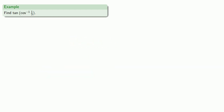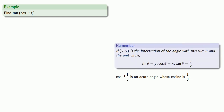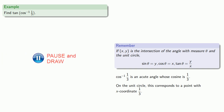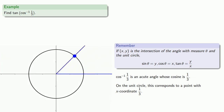How about the tangent of the inverse cosine of 1 third? The inverse cosine of 1 third is an acute angle whose cosine is 1 third. Let's draw the unit circle this time. If (x, y) is the intersection of the angle with measure theta and the unit circle, then sine of theta is the y value, cosine of theta is the x value, and tangent is y divided by x. Since cosine is 1 third, on the unit circle this corresponds to a point with x coordinate 1 third, which indicates an angle in the first quadrant, and the x coordinate of this point is our cosine value, 1 third.